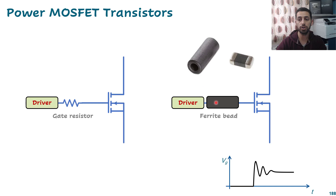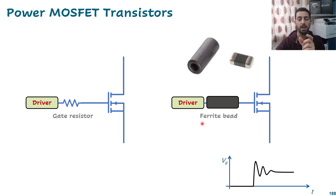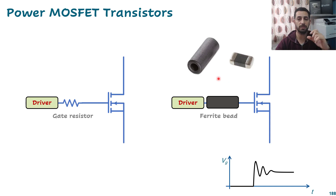Another solution is using a ferrite bead — a small ferrite material that you can insert your wire through or solder between the gate and driver. The ferrite bead has very low resistance at low frequencies and very high resistance at high frequencies, like an inductor. This provides attenuation for high frequencies, so it attenuates the megahertz-range oscillations and produces a smoother transition during turn-on with no peaks.